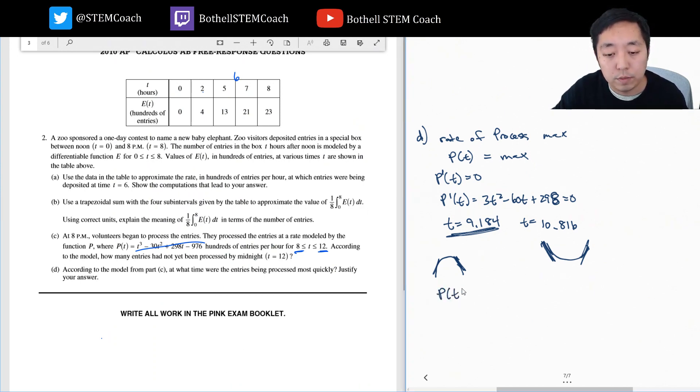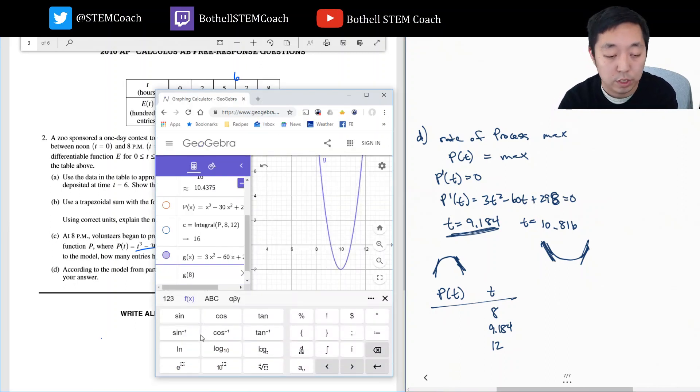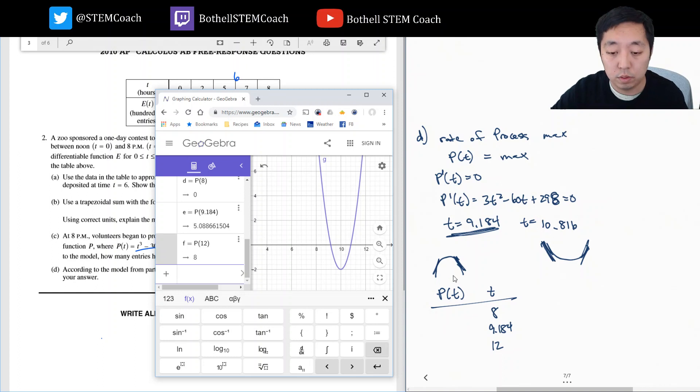And then I also want to compare the endpoints. So I want to compare P of T. I want to compare the points 8, 9.184, and 12, because I need to include the endpoints. I always need to include the endpoints when I'm doing that. So because I've written this as a function here, I can do P of 8, P of 9.184, and P of 12. So I have the value 0, 5.0887, and then 8. So this is the maximum one. So T equals 12.